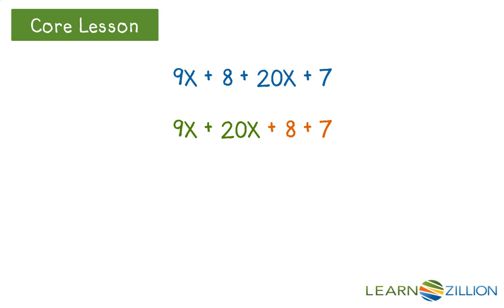Let's add like terms. Remember, I can only add x's to x's and numbers to numbers. So what would 9x plus 20x be? 29x. What about 8 plus 7? 15. Since we cannot add these together anymore, we would have the expression 29x plus 15. This is the simplest form.